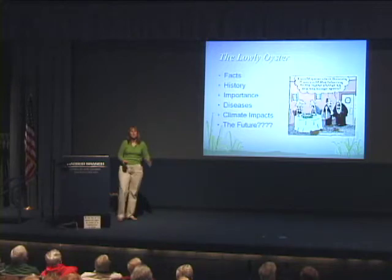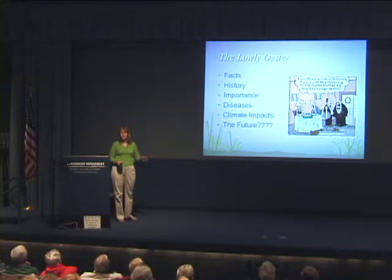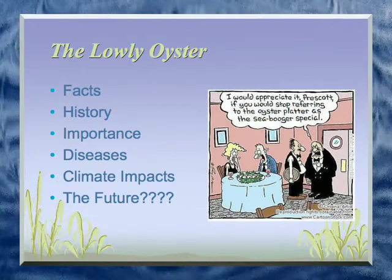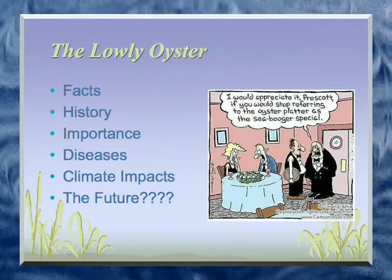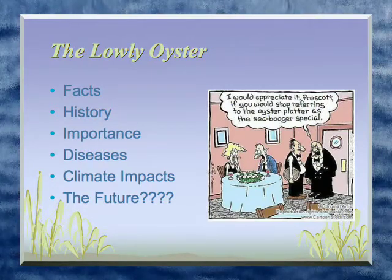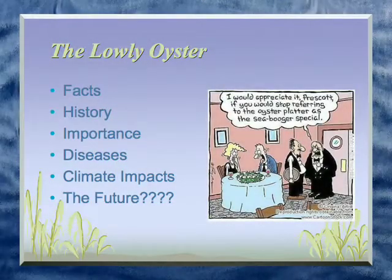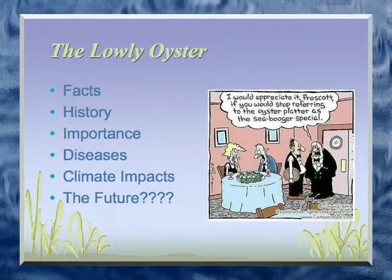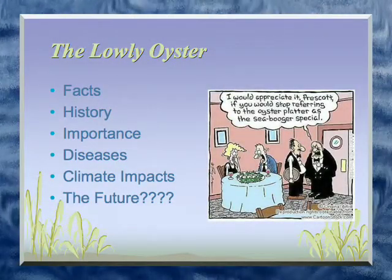I'm going to start at the very beginning and assume that you don't know anything about oysters. We're going to go through a lot of little facts before we get to diseases, which I find interesting but some of you may find a bit boring. And how does climate variability and change impact that? And what can we do about all that?